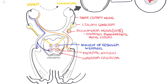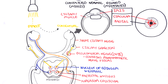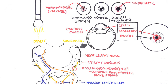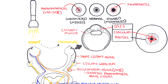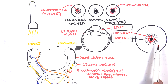And so you get pupil constriction. That is why when you shine a light to the left eye, the left pupil will constrict but also the right will constrict — thus you have a direct and consensual response.